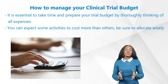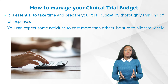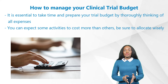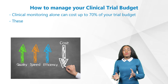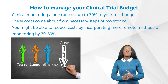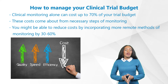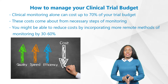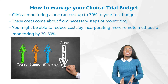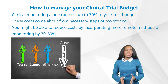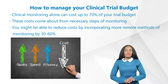It is therefore essential to take time and prepare your trial budget by thoroughly thinking through all expected expenses. Some activities will cost more than others, so be sure to allocate wisely. For instance, clinical monitoring alone can cost up to 70 percent of your trial budget depending on the complexity of the study. If you have several sites globally, costs will be accrued from just traveling to the site, usually done by the CRAs or clinical monitors.